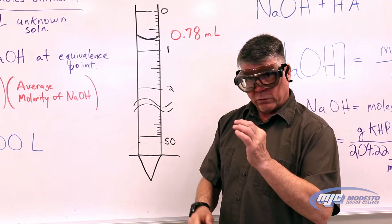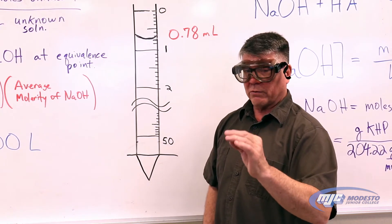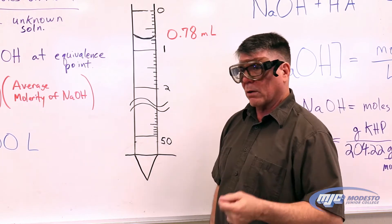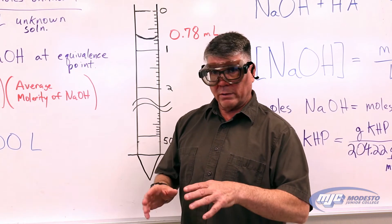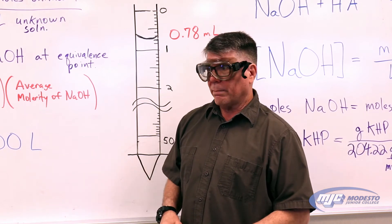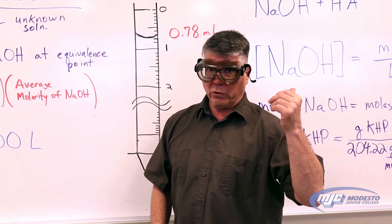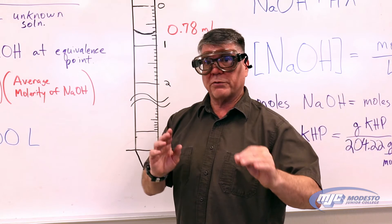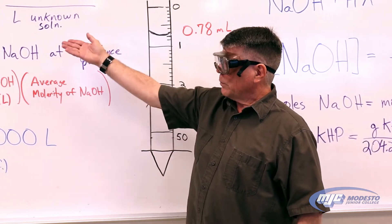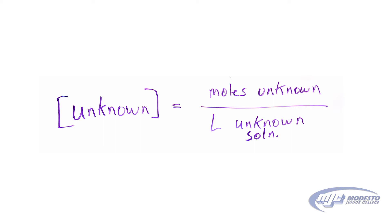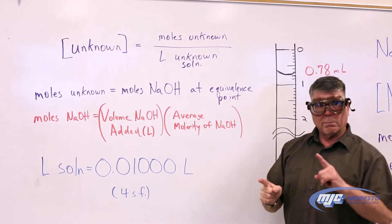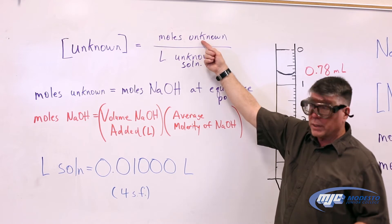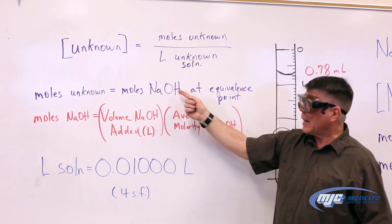In the second part, we use the standardized sodium hydroxide to determine the concentration of our unknown acid. The unknown acid is a solution that looks like water, and it's a monoprotic acid, which means the same one-to-one mole ratio between sodium hydroxide and our unknown acid still applies. The concentration or molarity of our unknown equals the moles of our unknown over the liters of our unknown solution. Because it's a one-to-one mole ratio, the moles of unknown acid equal the moles of sodium hydroxide added at the equivalence point.